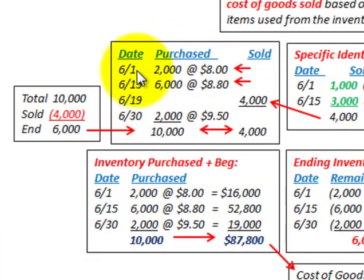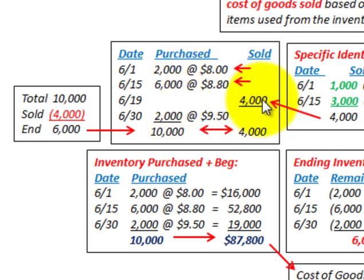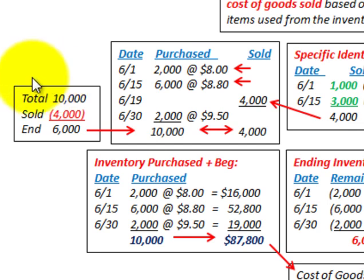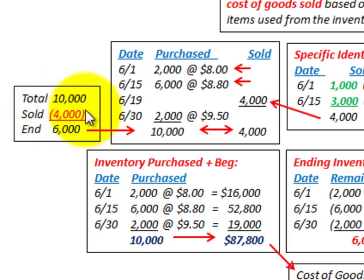For this example, we're going to have a certain date, a quantity of inventory purchased at a specific price, and a number of purchases for the period. We're going to have a sale of 4,000 units out of the total 10,000 units purchased. I'm not using a beginning inventory here just to keep it simple. So we have 10,000 total units, we sell 4,000, and our ending inventory is 6,000 units.